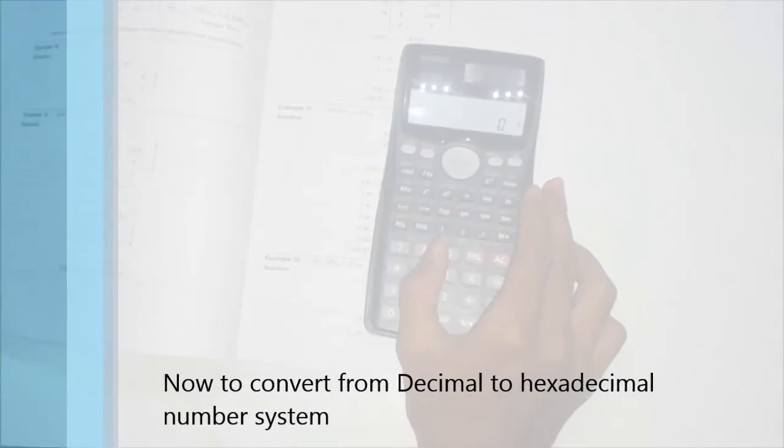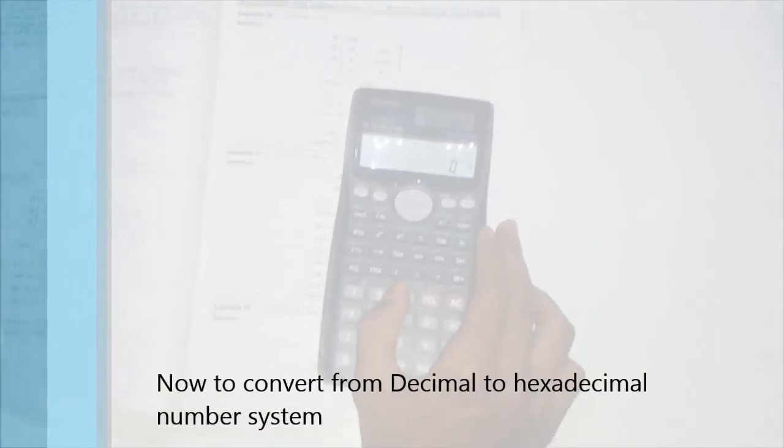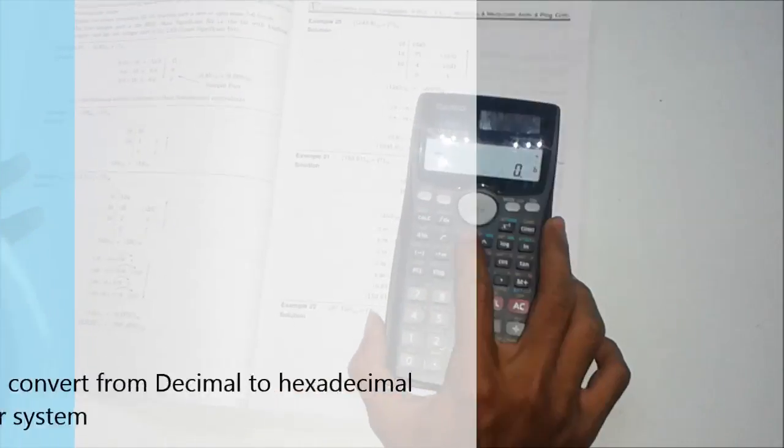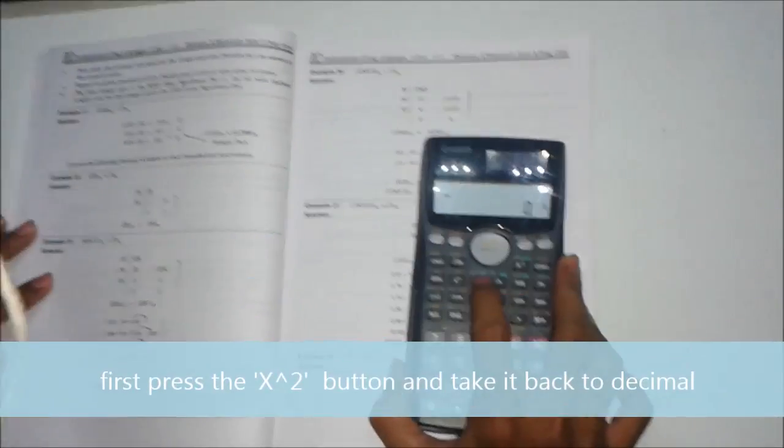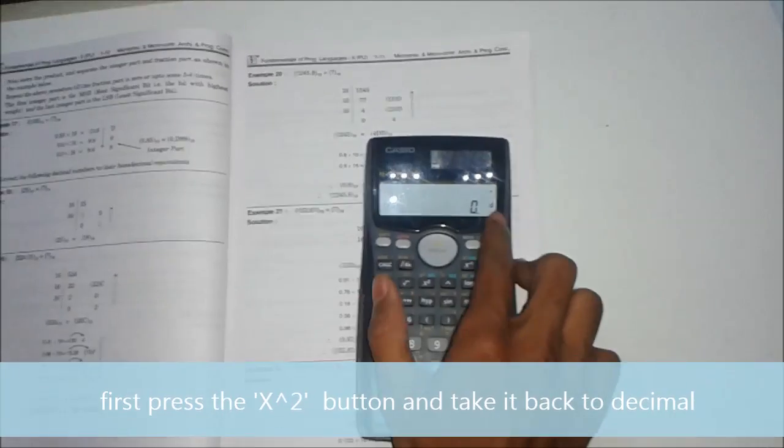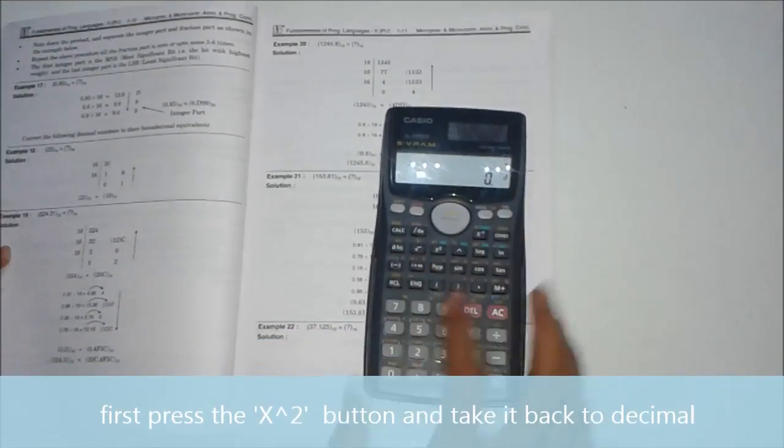For converting from binary to decimal or binary to hexadecimal, first press the X square button. You can see AC/repeat written above it. Press it to take it back to the decimal form.